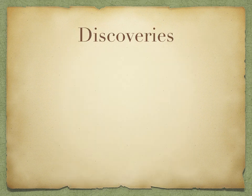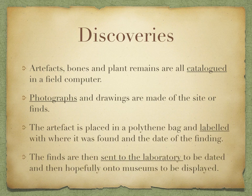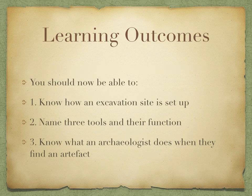Imagine we've discovered a bone on the grid in square A1. All artifacts, bones, and plant remains are catalogued and entered into the field computer. Photographs and drawings — drawings being very important to archaeologists — are made of the site and findings. The artifact is then placed in a labeled polythene bag recording where it was found and the date, and it is sent to a lab to be dated and hopefully on to a museum to be displayed.